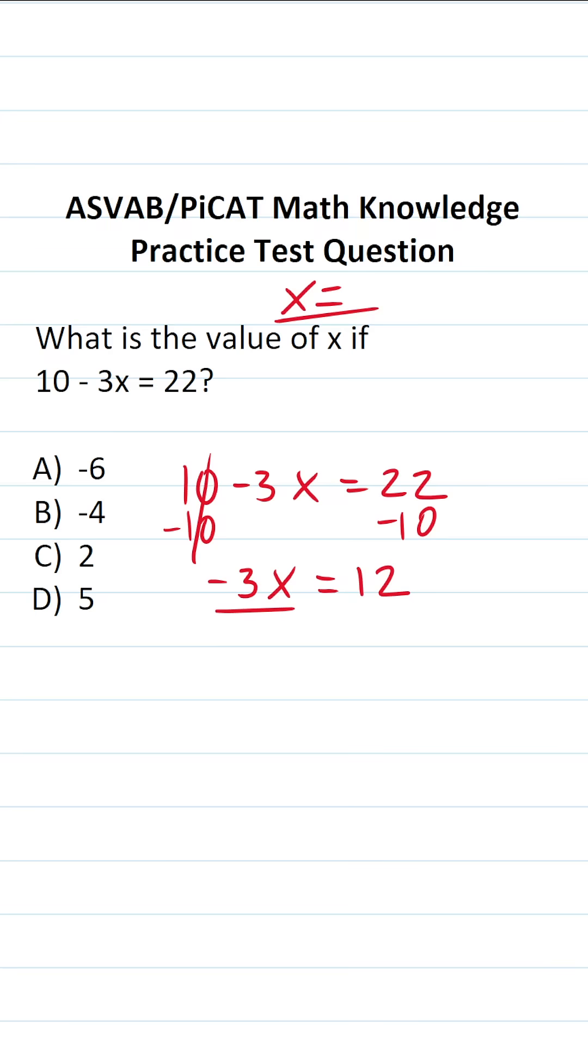And to get x by itself now, we're going to divide both sides of the equation by negative 3. Negative divided by a negative is a positive. More specifically, those cross out. Positive 12 divided by a negative 3. A positive divided by a negative is going to be a negative. More specifically, that's going to be negative 4.